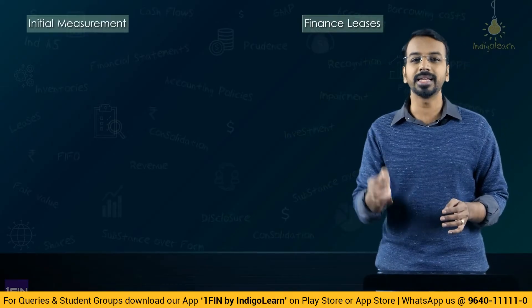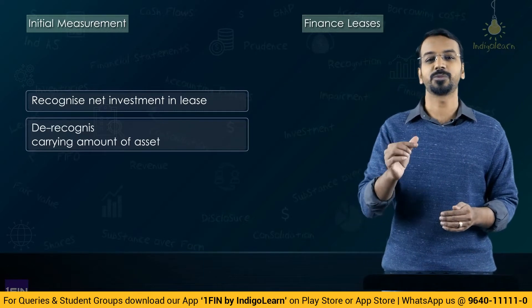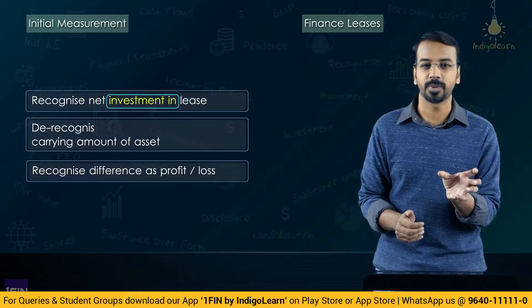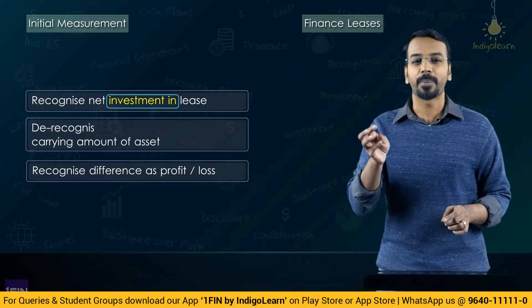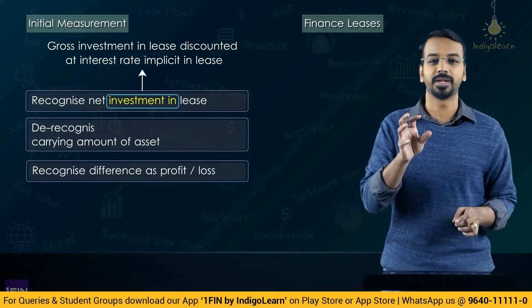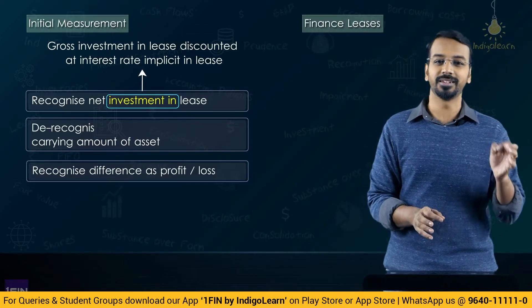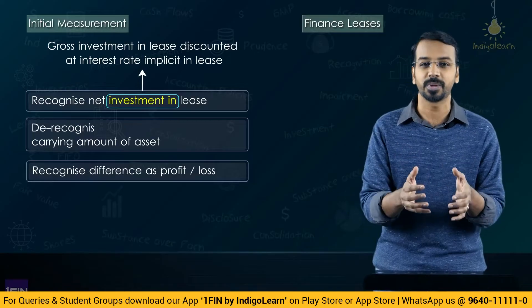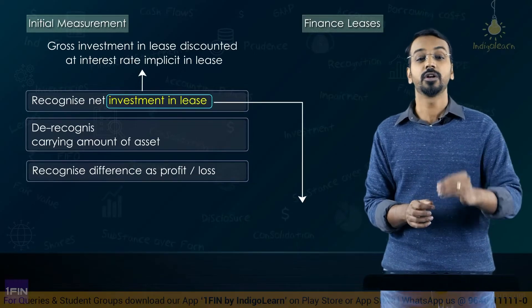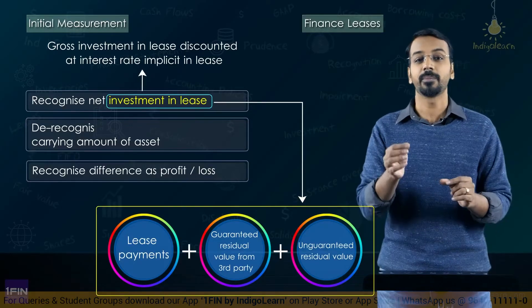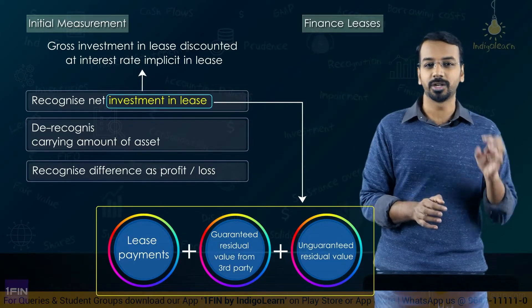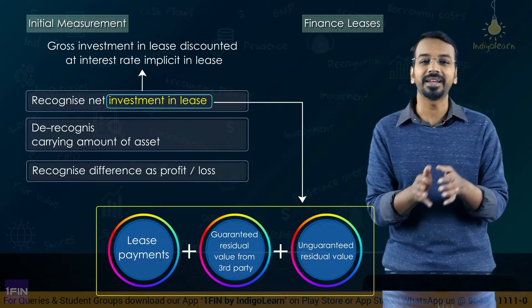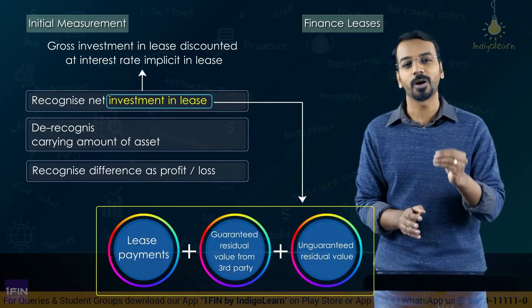As far as finance lease accounting in the books of the lessor is concerned, you would recognize something called a net investment in lease and de-recognize the underlying asset, with the difference being debited or credited to P&L. Net investment in lease is the present value of gross investment in lease at the interest rate implicit in the lease. Gross investment in lease is the sum of lease payments from the lessee's perspective, plus any guaranteed residual value from a third party, plus the unguaranteed residual value — all three put together.